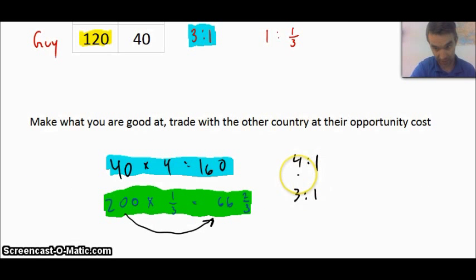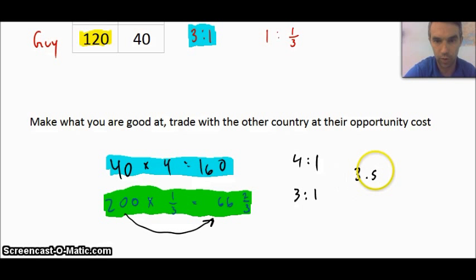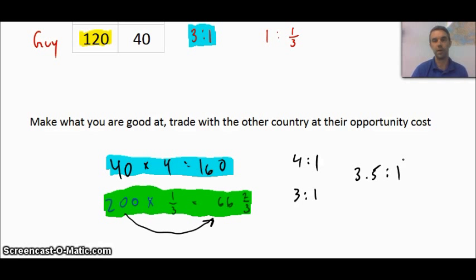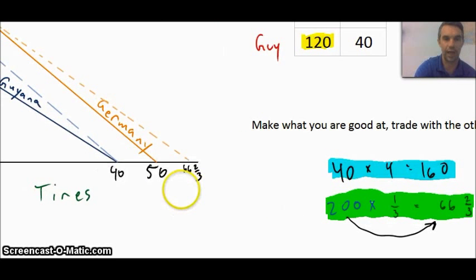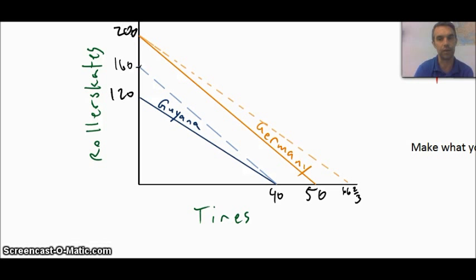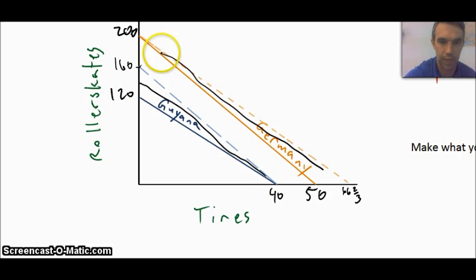Instead of one country getting 4 to 1 and the other getting 3 to 1, they would probably average those and settle on a 3.5 to 1 ratio, which would benefit both countries equally. The whole concept here is that through comparative advantage both countries can do better and both countries can push their PPC curves out. Guyana would come out somewhere between, and Germany would also expand — both being helped through international trade.